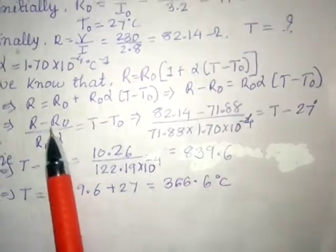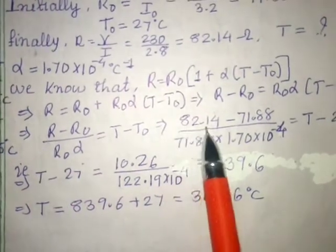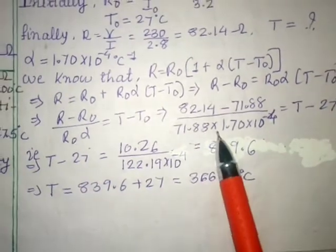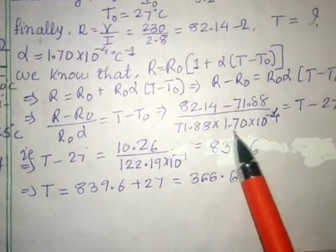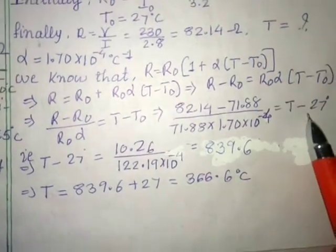So here I have to transfer, and keep T minus T0 here. Put the value: R is 82.14, R0 is 71.88, R0 is 71.88, and alpha value is given as 1.70 times 10 to the power minus 4. And this T0 is also given as 27 degrees. Simplify this.